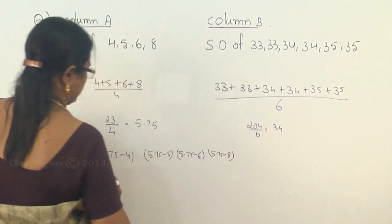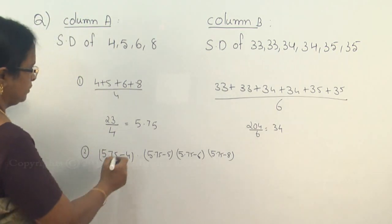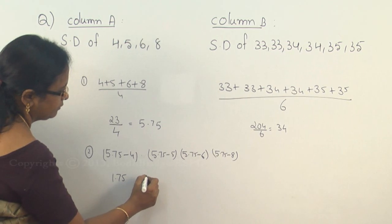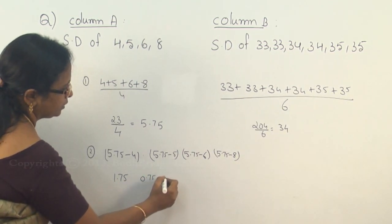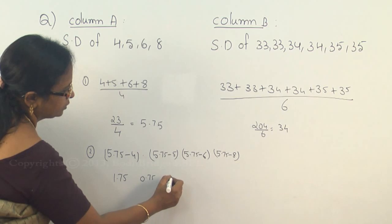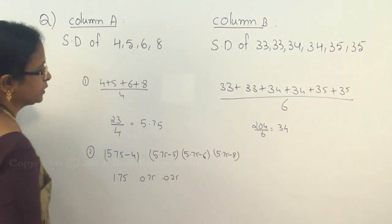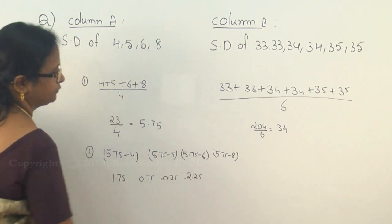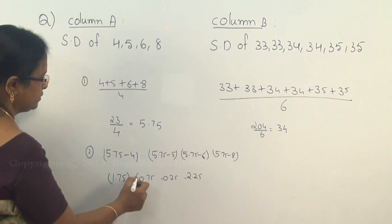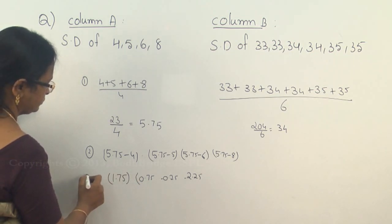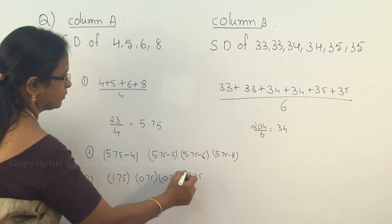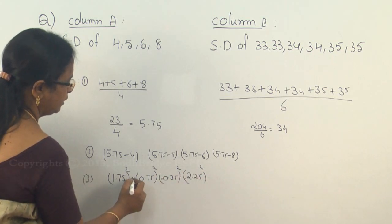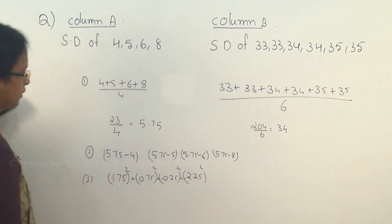then 5.75 minus 8, which is 1.75, this is 0.75, this is 0.25 in negative, and this is again 2.25 in negative. Square all these values, that's the third step.